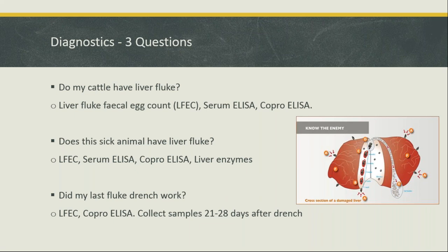For diagnostics, there are three questions you should ask whenever you use a diagnostic test. The first is: do my cattle have liver fluke? With liver fluke there are several different tests, unlike normal worms where we mainly use a faecal egg count. For liver fluke we have quite a few different tests, each with pros and cons. The three main options are: a liver fluke faecal egg count via sedimentation, a serum ELISA, and a coproantigen ELISA.